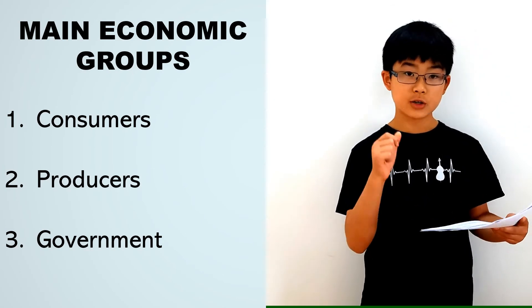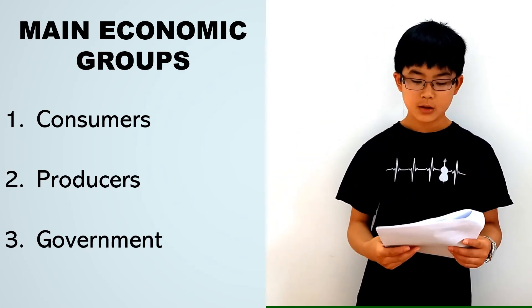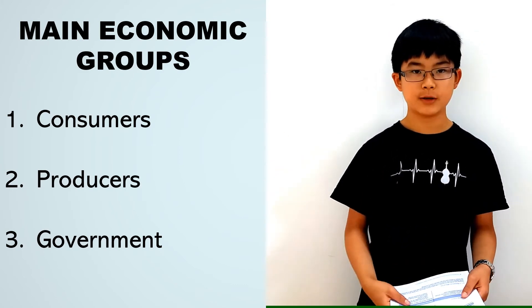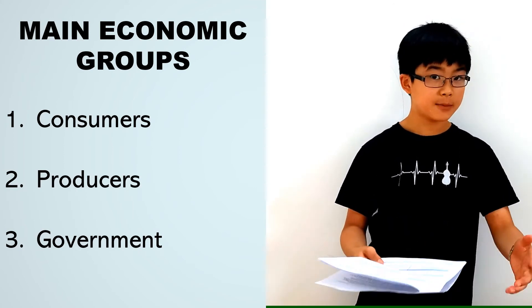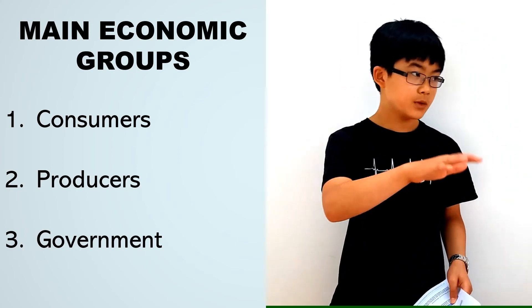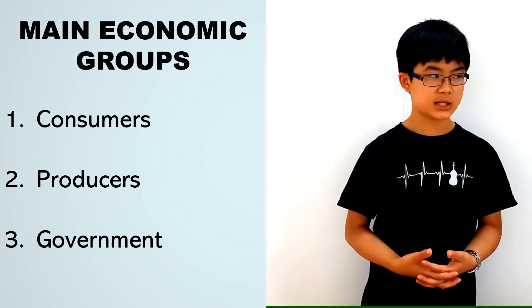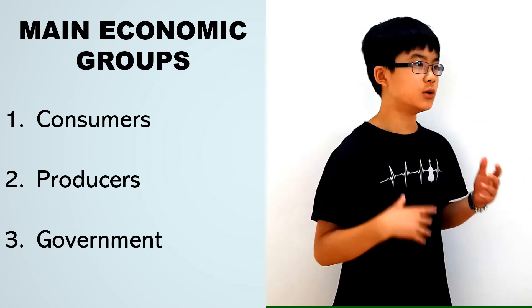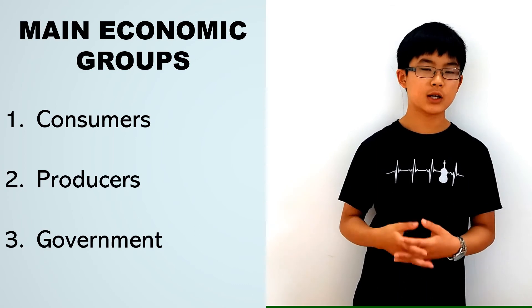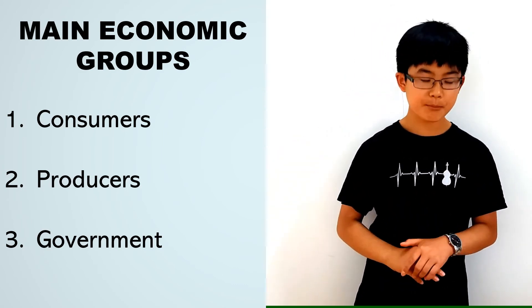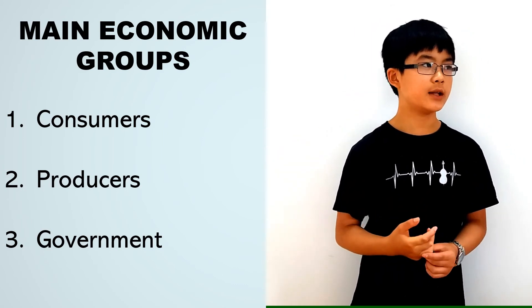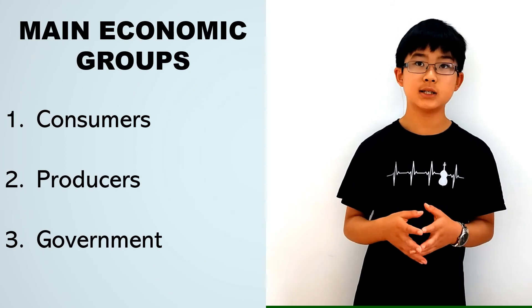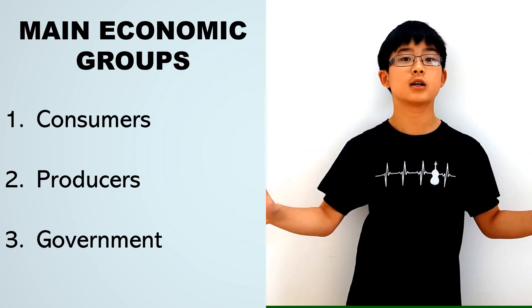Okay, the main economic groups are the consumers, which is us buying from the shop, the producers, which are the farmers, factory producers and stuff like that, and the government. They're the main groups and they interact all together. There's actually something called the circular flow model that I'll probably make a future video on, and that just shows all the interactions of all these groups, which also includes the financial system. But mainly, you just need to know that the way they interact is consumers buy from producers who produce items, the government taxes them, and this is all in the circular flow matrix.